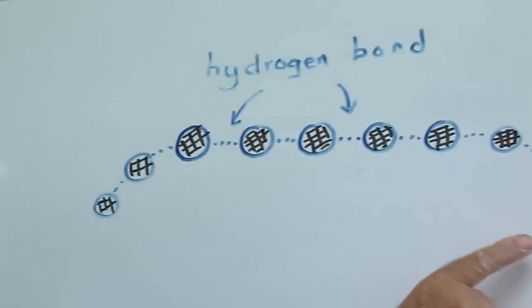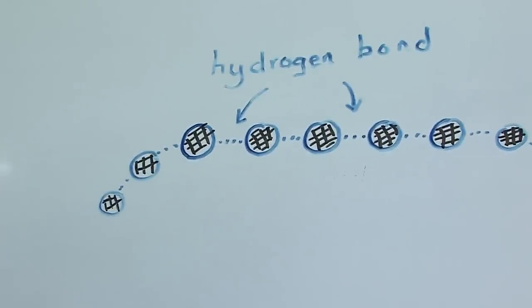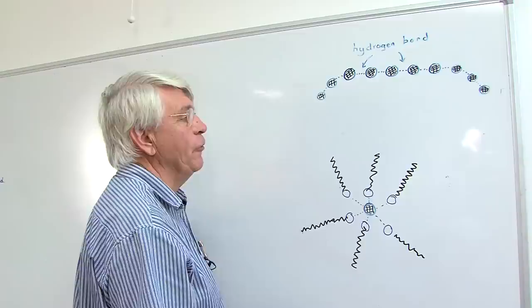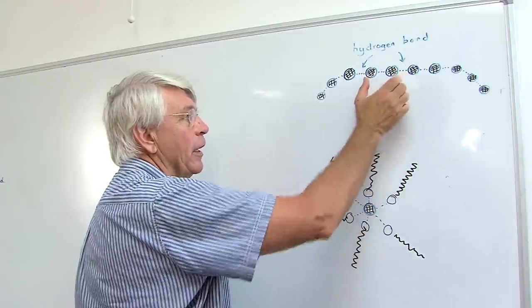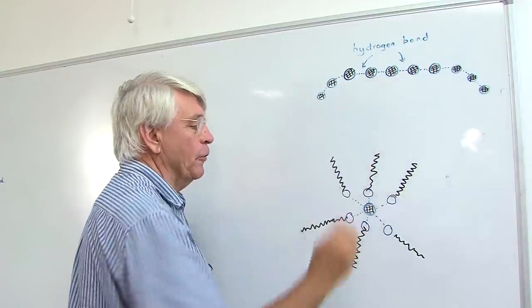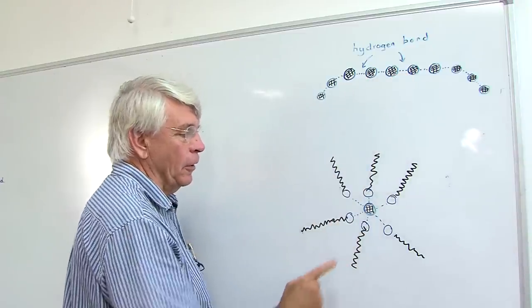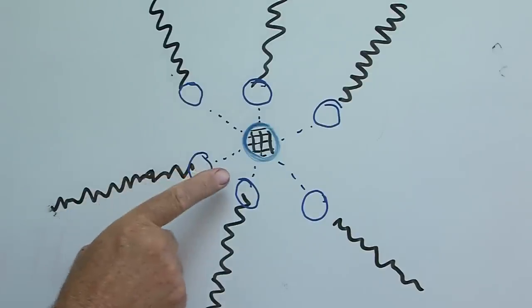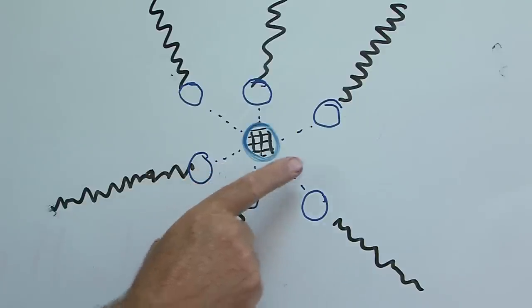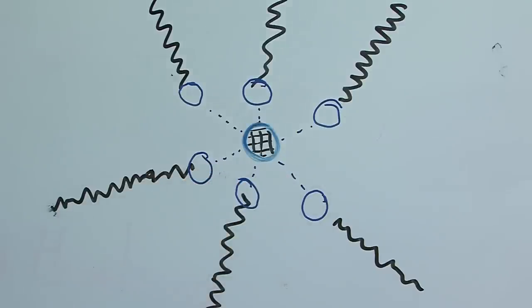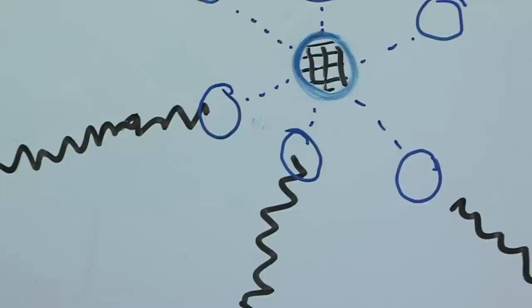The meniscus of the water we've just seen has water molecules held together by hydrogen bonds. Put your detergent molecule into it and what happens? Those bonds break, and all the polar heads now latch onto the water molecules — end of hydrogen bonds.